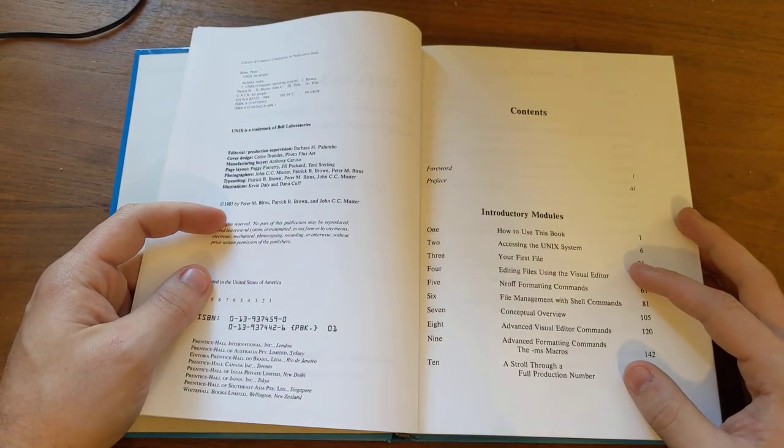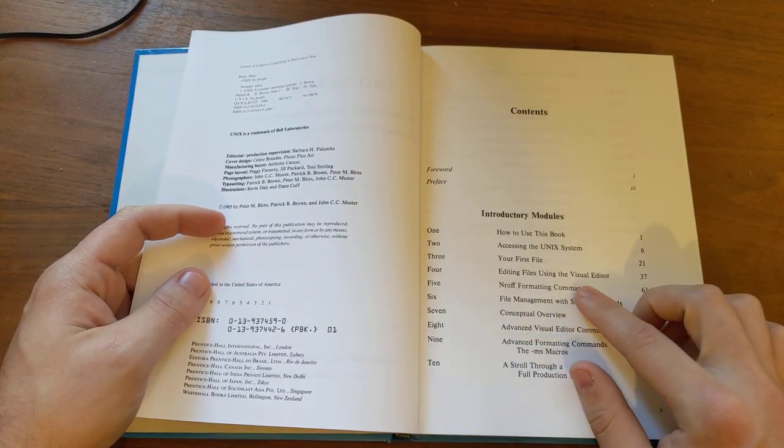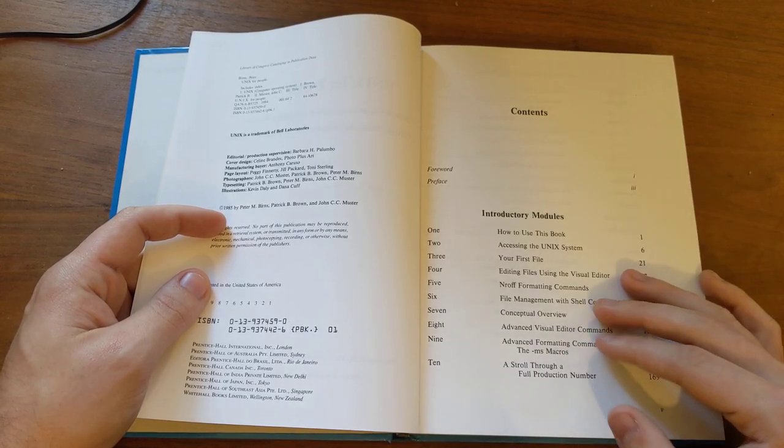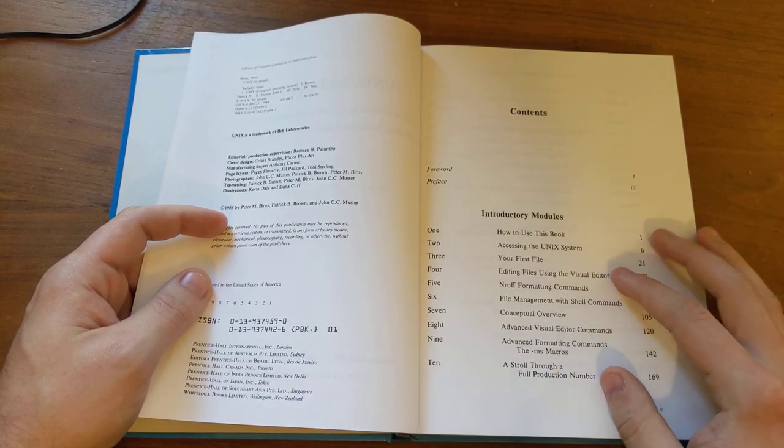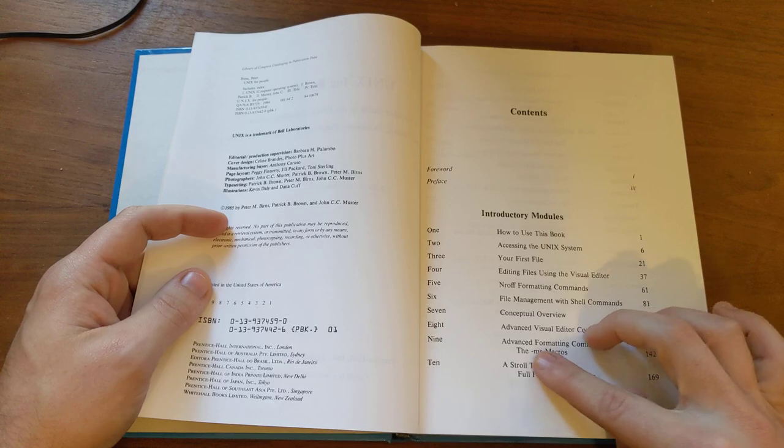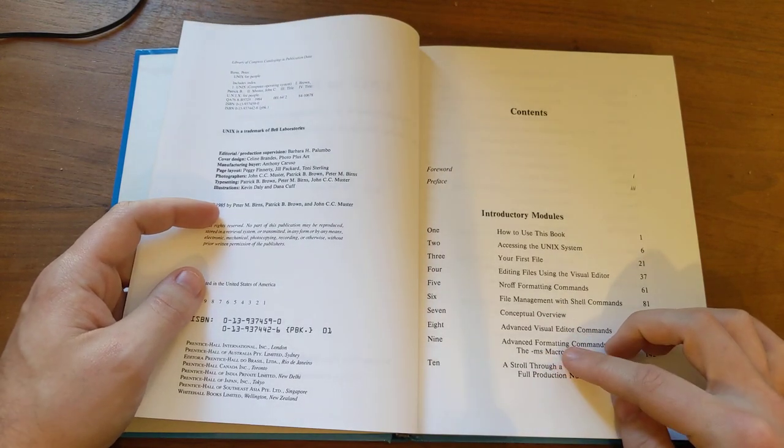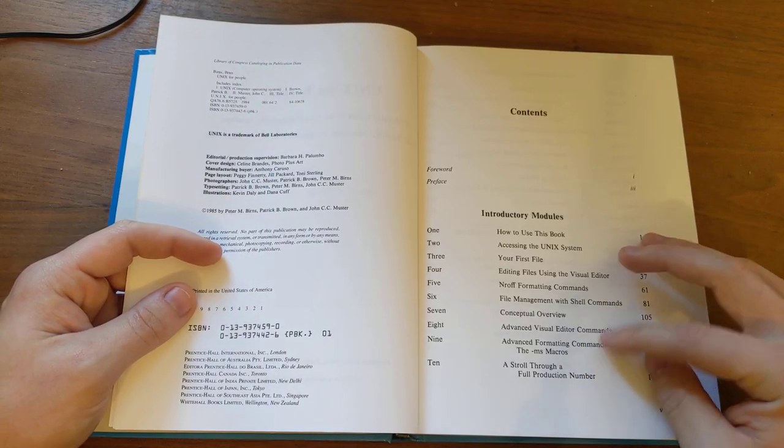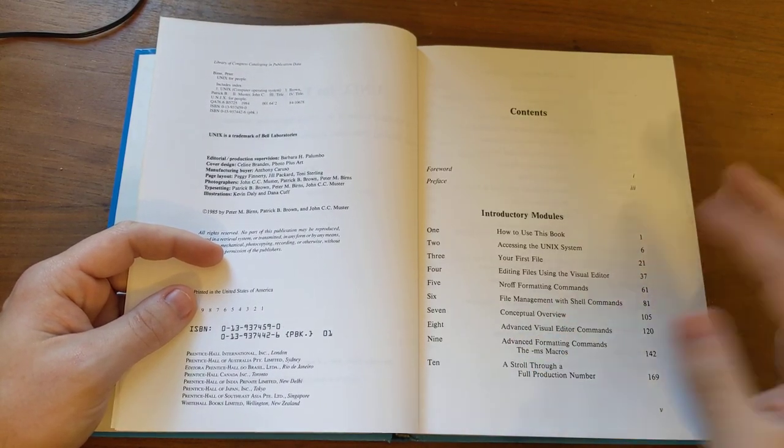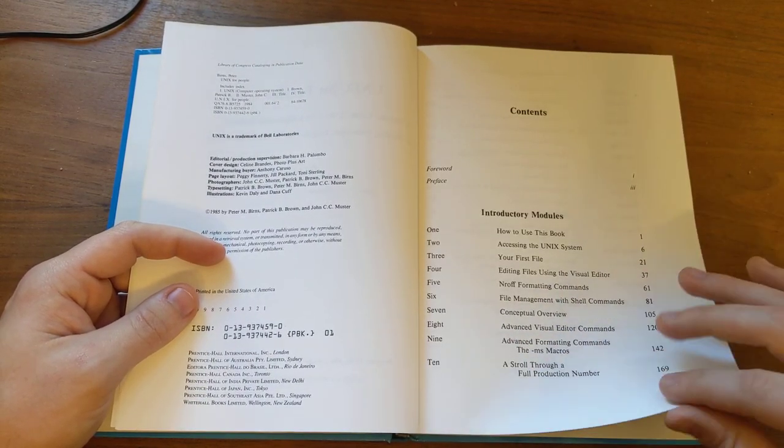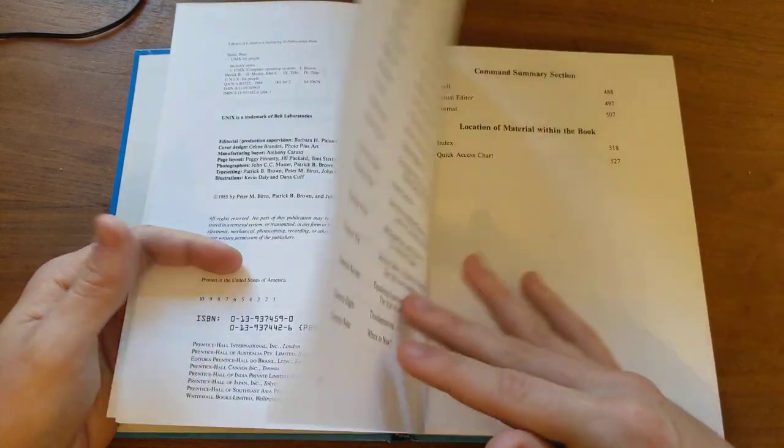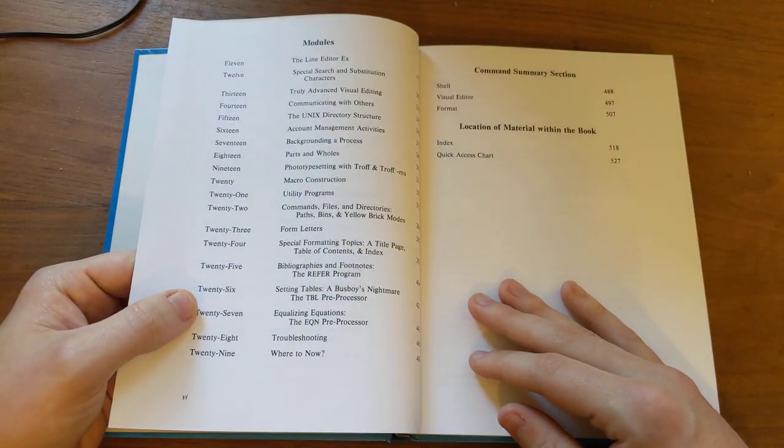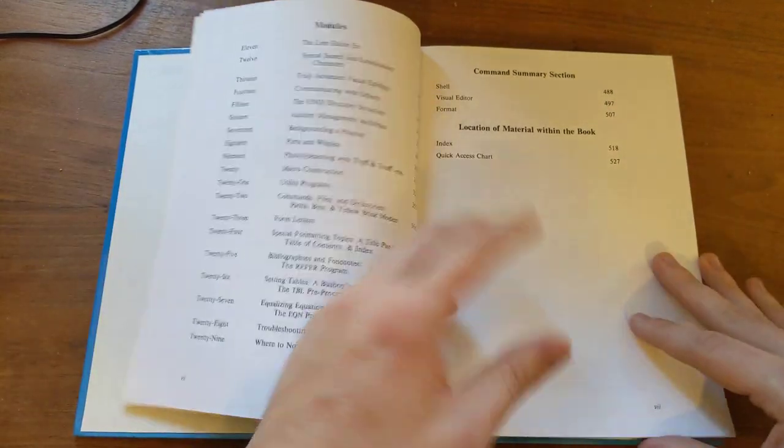So, they talk about things like using editing files using the visual editor. That is VI. That's basically Vim. So, they teach you how to use Vim. They teach you how to use the MS macros in Roff. I've actually done a series of videos on the MS macros. You can look up Groff, Luke Smith, and they'll come up. That's like formatting documents and things like that. And all the things you really, I don't know, let's just get into it. It's an interesting book.